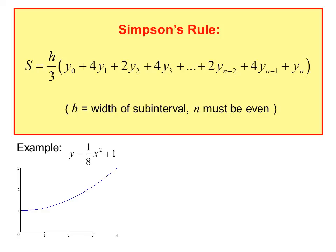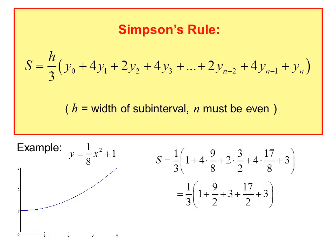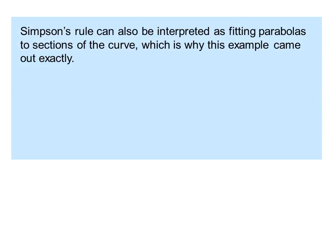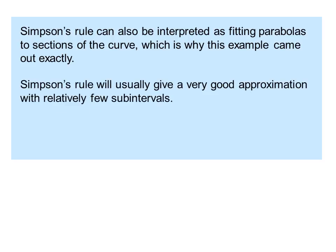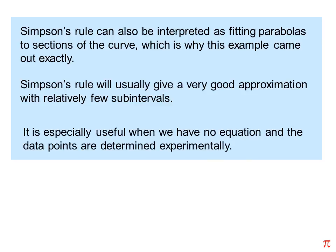Here's an example. For y equals 1/8 x squared plus 1, S would be 1/3 times (1 plus 4 times 9/8 plus 2 times 3/2 plus 4 times 17/8 plus 3), or 1/3 times 20, which is 6.6 repeating. Simpson's rule can also be interpreted as fitting parabolas to sections of the curve, which is why this example came out exactly. Simpson's rule will usually give a very good approximation with relatively few subintervals, and is especially useful when there is no equation and data points are determined experimentally.